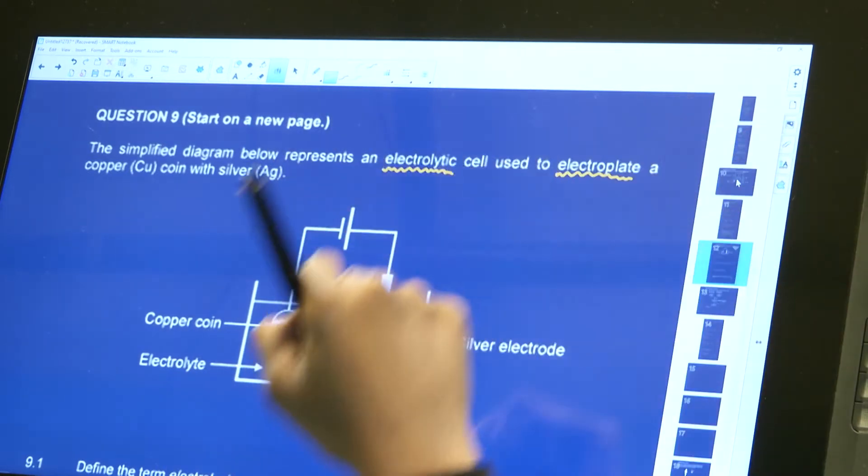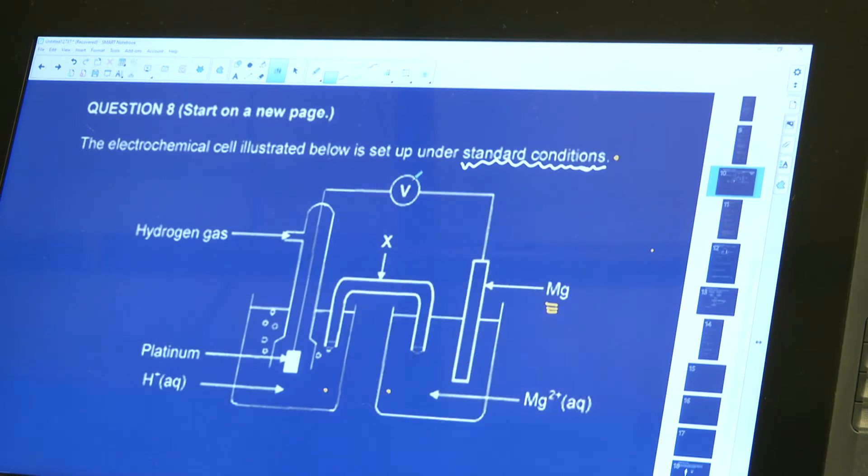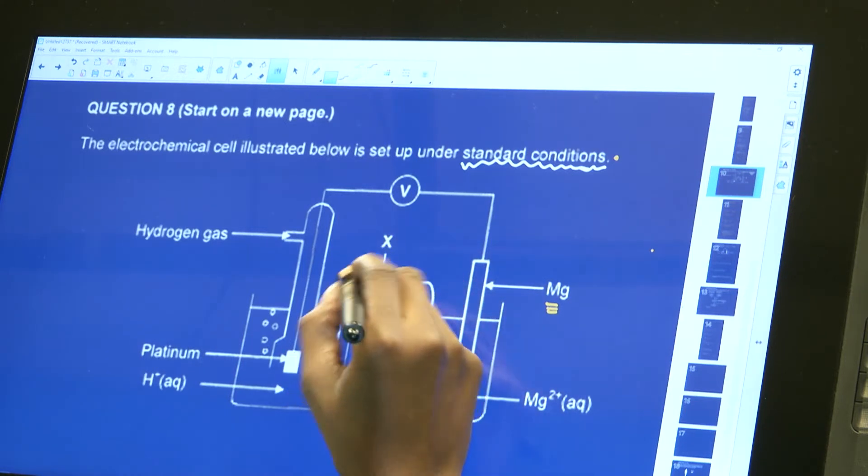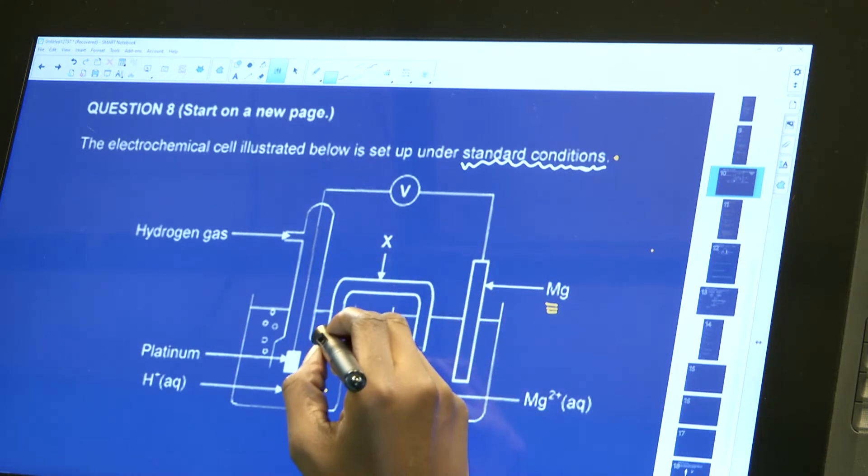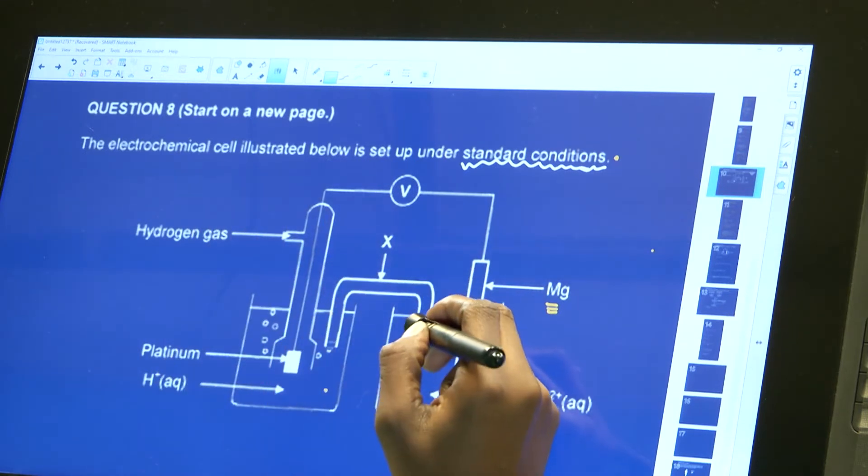With the previous one that we did, I see that I've got a voltmeter here. That's why we were asked to calculate the voltmeter reading. We were also asked to give one function for X, which is our salt bridge.